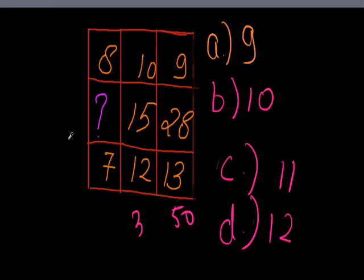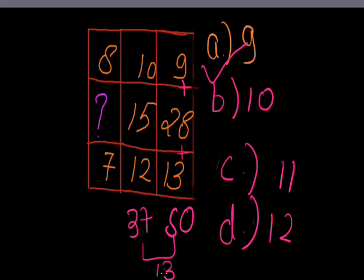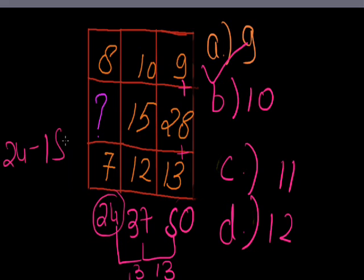Yeah, but it has one more answer. Do you want to know? Yes. How can we? Two answers. It's 9. So when we add these three numbers, 9 plus 28 plus 13, it comes 50. 10 plus 15 plus 12, it comes 37. And if we add these numbers, it has a number of 13. When we add this number, difference of 13, so it should also have a difference of 13. So it should come 24.